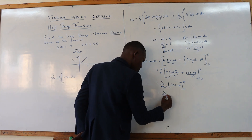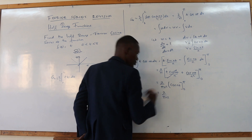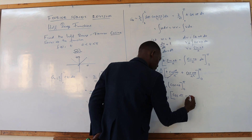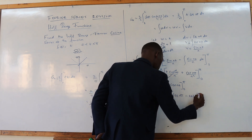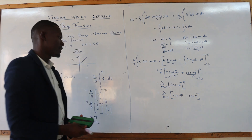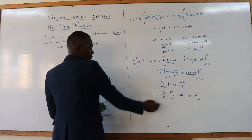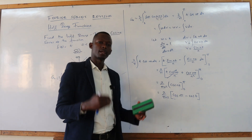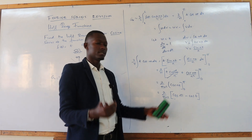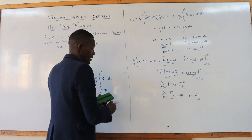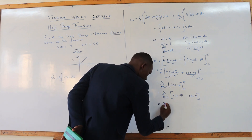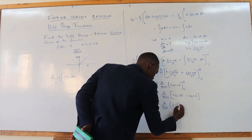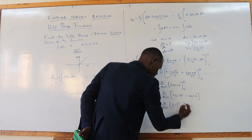Inputting the limits, we have 2 over (πn²) times [cos(nπ) minus cos(0)]. We know that cos(nπ) is given by (−1)^n. So cos(0) is 1, giving us 2 over (πn²) times [(−1)^n − 1].